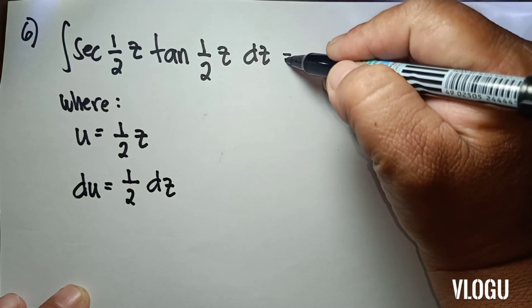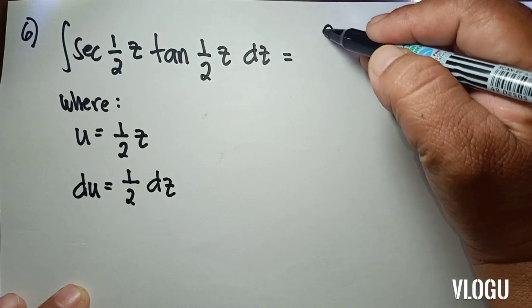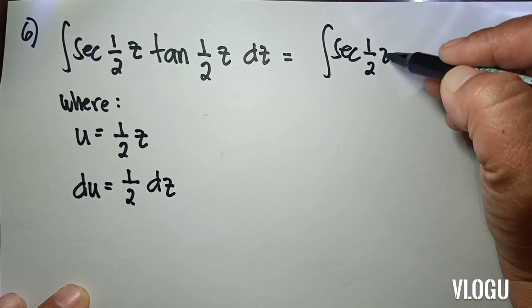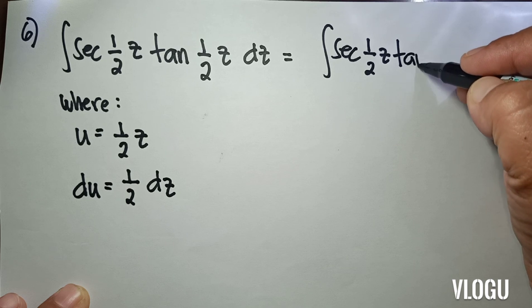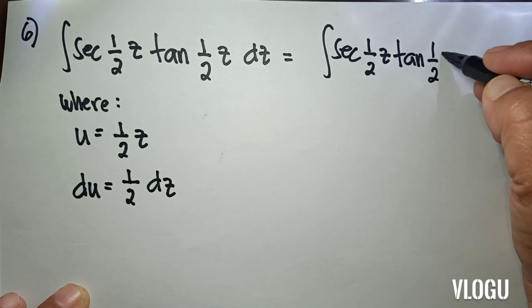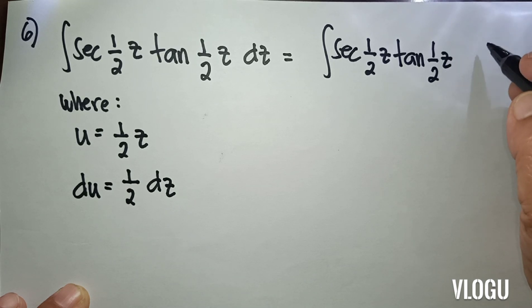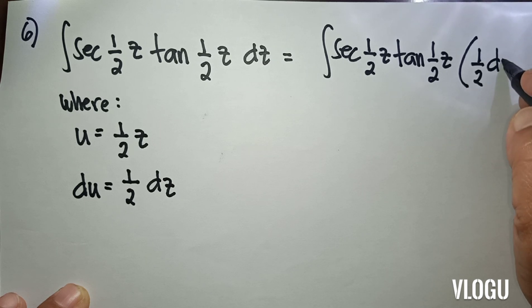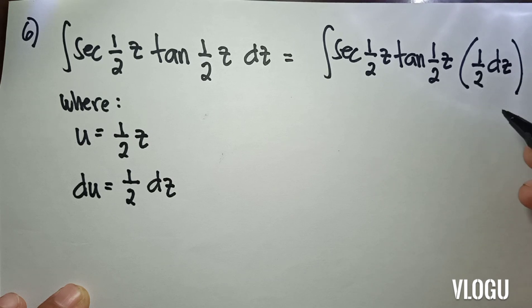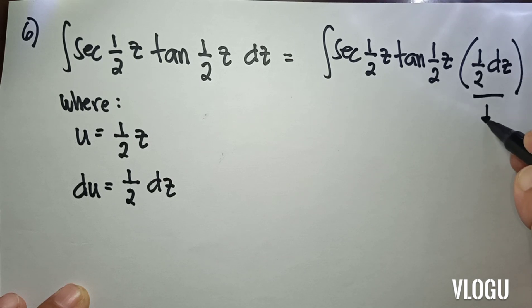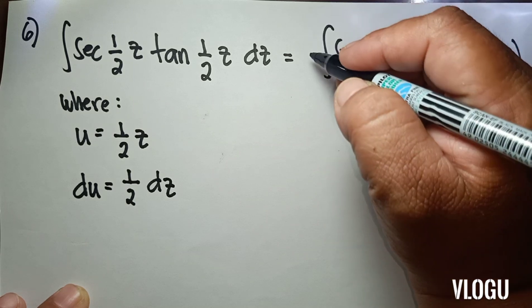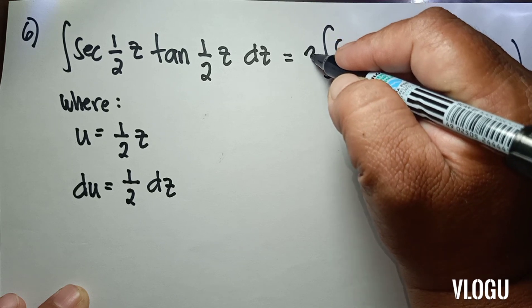Writing it again, we have sec(½z) tan(½z), with 1/2 dz as our du. We multiply 1/2, so we multiply 2 outside.